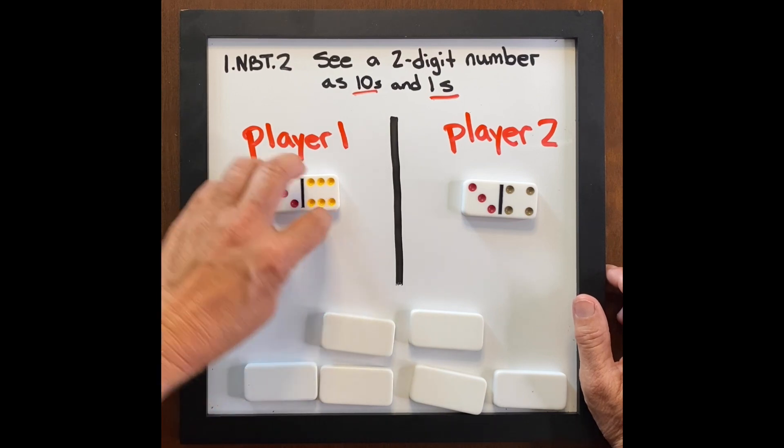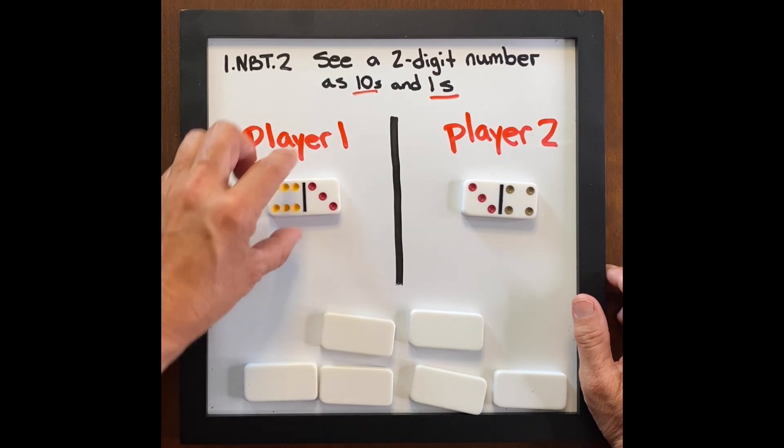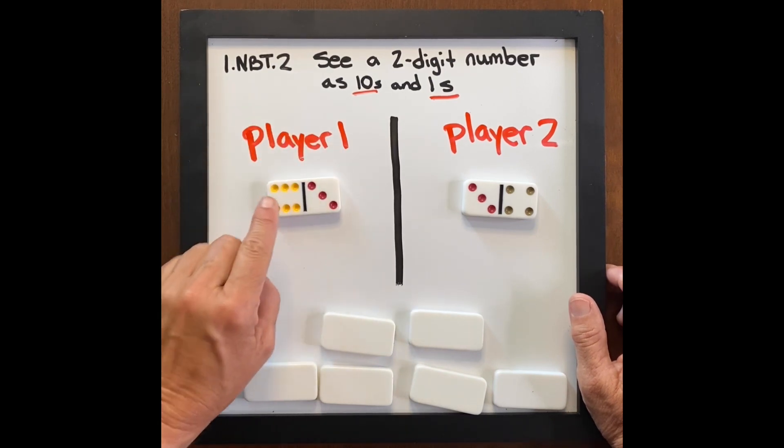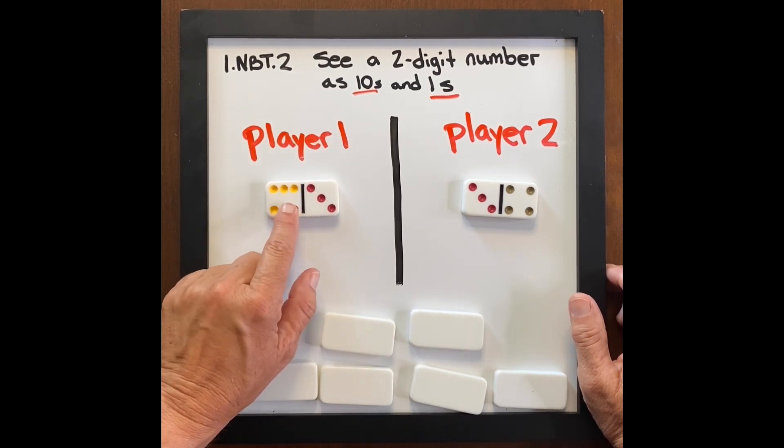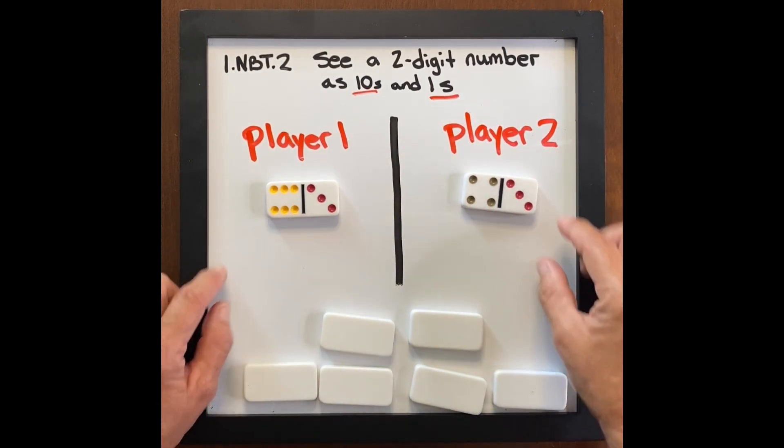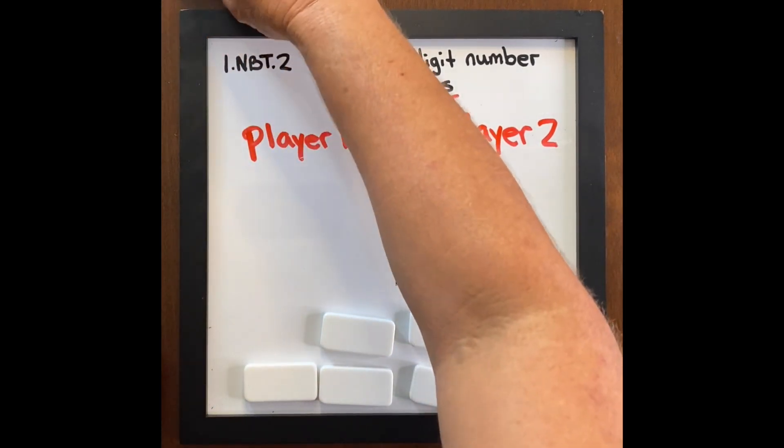Because if I saw this, I would say, I have an opportunity to win because I know that three tens is 30 and six tens is 60. And this is a better point value for me. So 63 is greater than 43. So player one would get the dominoes.